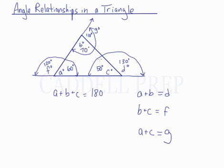So the sum of all the interior angles is 180. A plus B plus C is 180. And the exterior angle, so this angle for example, equals the sum of the other two interior angles.